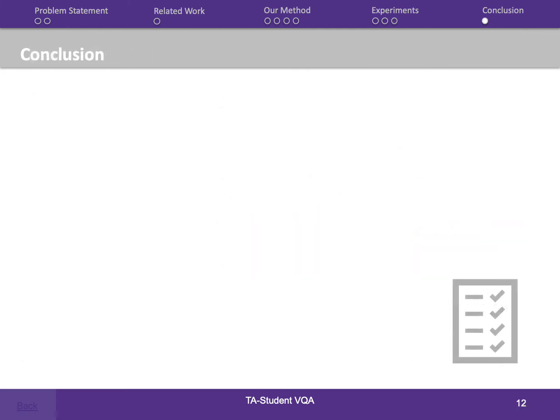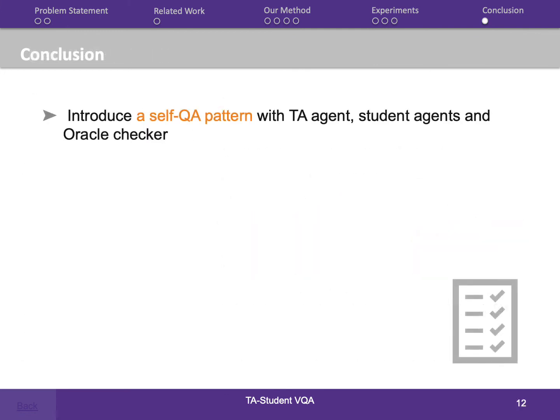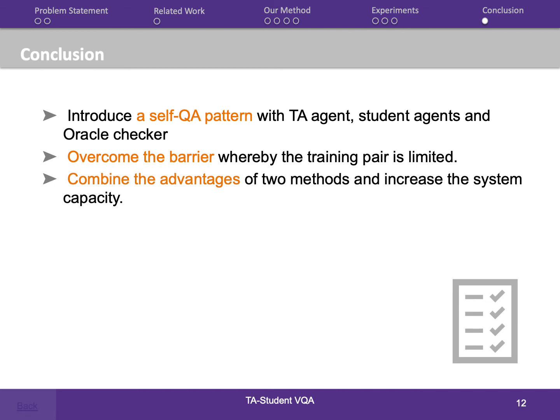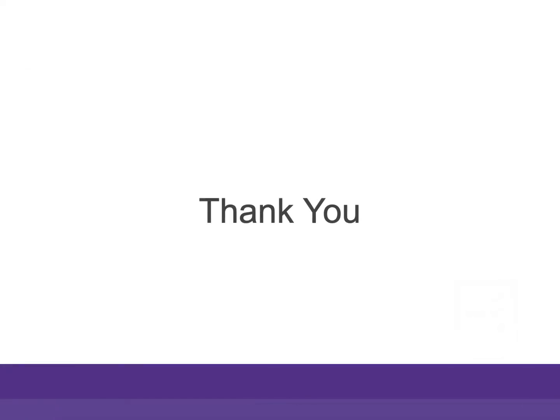To wrap it up, our paper introduced a self-QA pattern and proposed a system based on this idea. Unlike previous work, our mechanisms overcome the barrier whereby the training QA pairs for each image are limited. Additionally, utilizing two VQA agents combines the advantages of two methods and increases the system capacity. Thanks for listening.